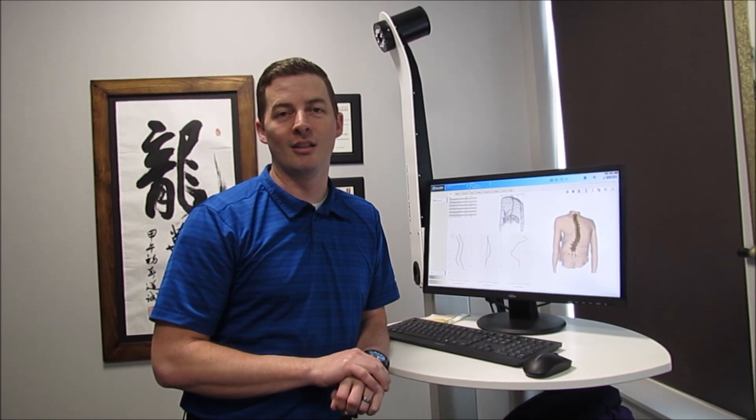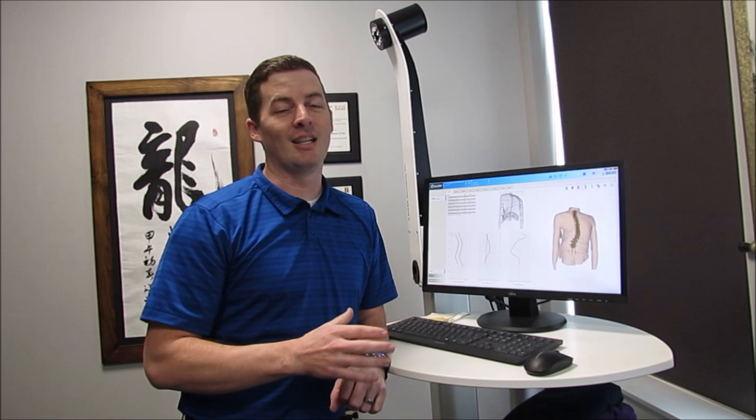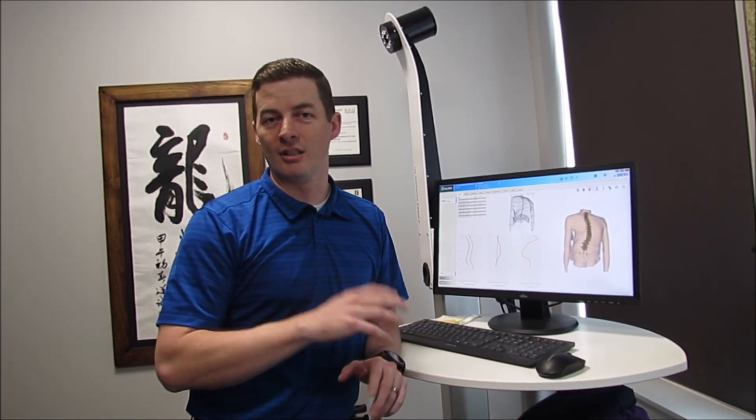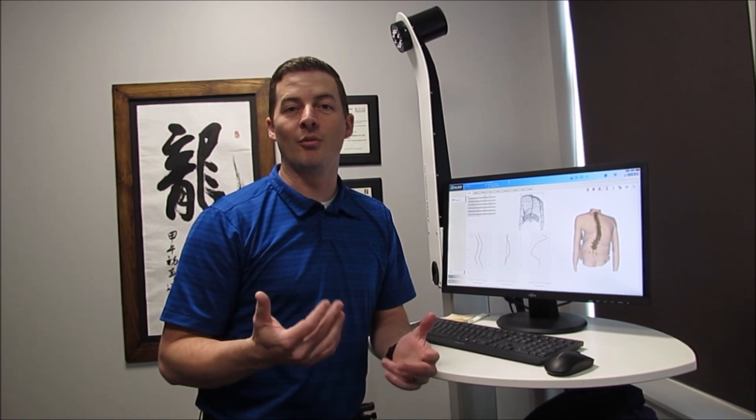So one thing to remember with the surface topography is we're not actually seeing the spine. We're seeing the computer's representation of what the spine looks like based on the posture and the contours of the back. So in that way it's a little different than an x-ray, but it actually gives us a lot of information that we can't get from an x-ray. That's why I really like it with spinal deformities because it really shows us specific information on posture and the contours of the back.